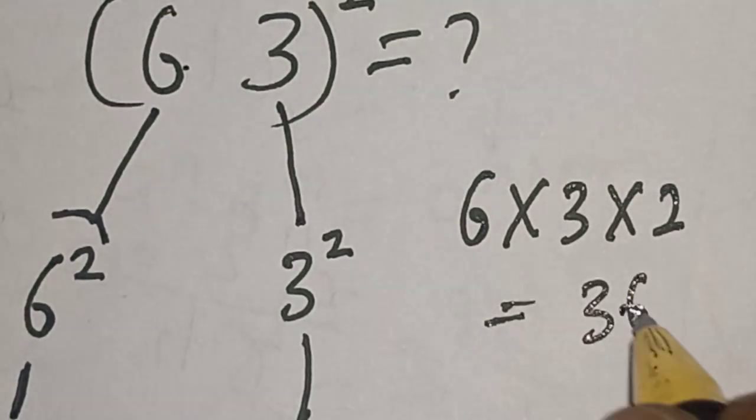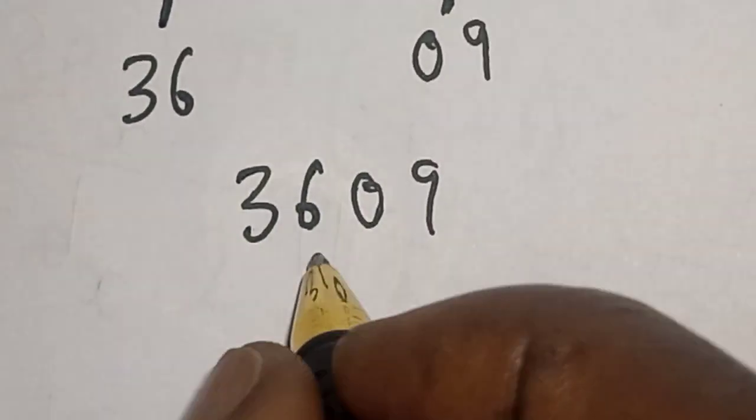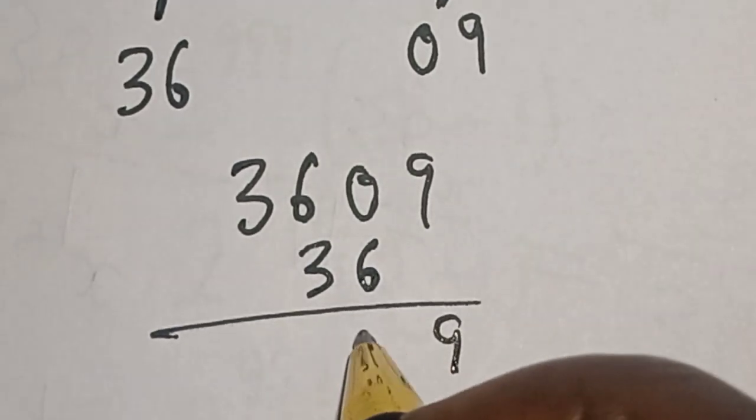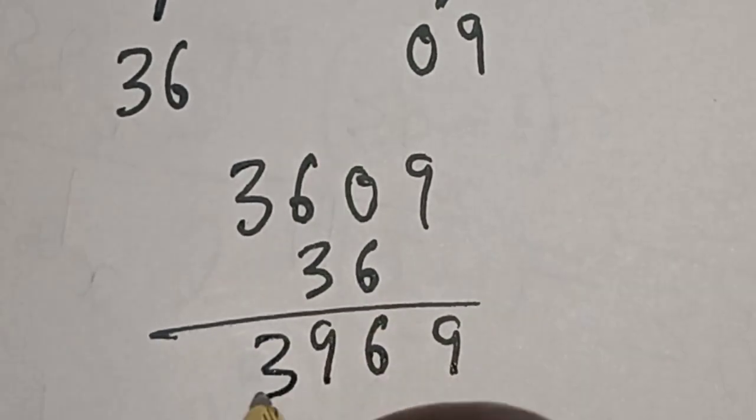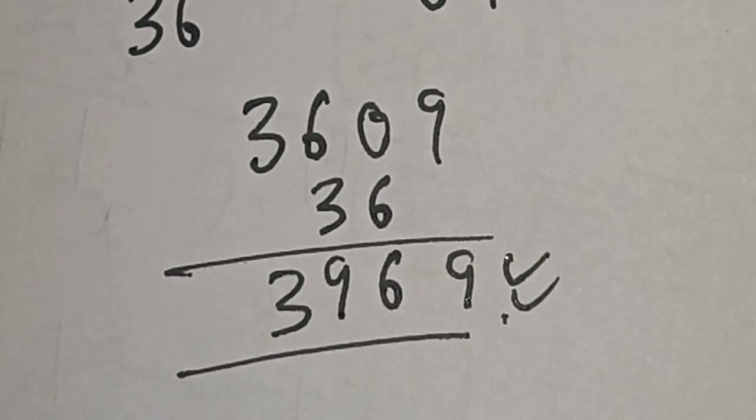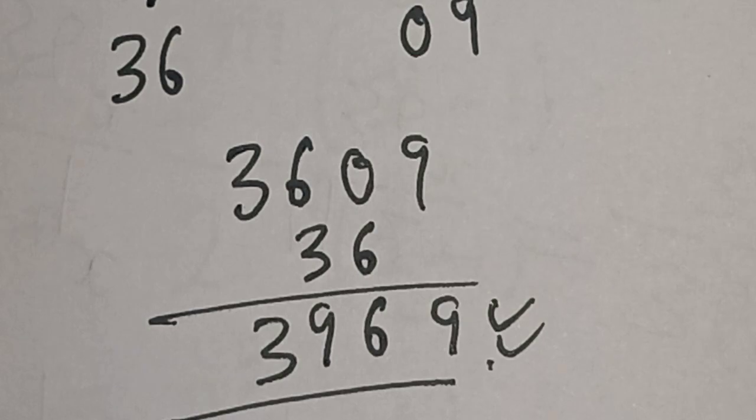Now let's add 36 to this. So we have 3969. That is our final answer. You can see the short method, that is very easy.